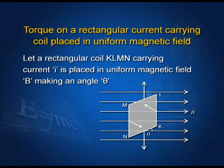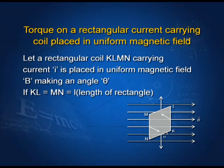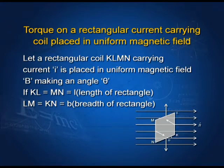We begin with the topic: torque on a rectangular coil carrying current placed in a magnetic field. Let a rectangular coil KLMN carrying current I be placed in a uniform magnetic field B making an angle theta. Here KL equals MN equals length L of the rectangle, and LM equals KN equals B, the breadth of the rectangle.